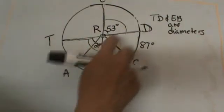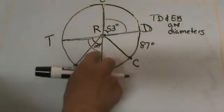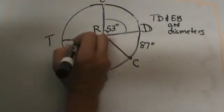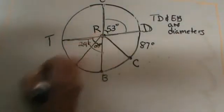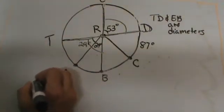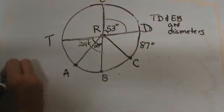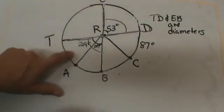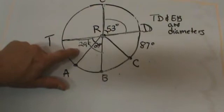That means I can take 53 minus 24 to get the smaller part, and when I subtract I get 29. So that means TRA is 29 degrees for your first answer.